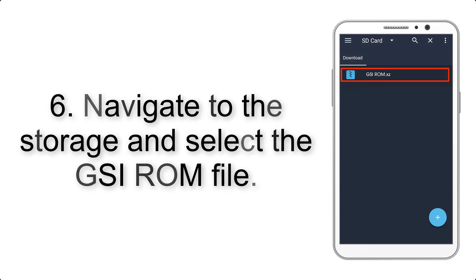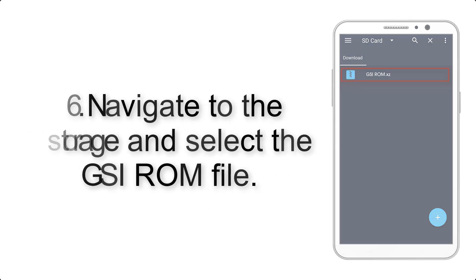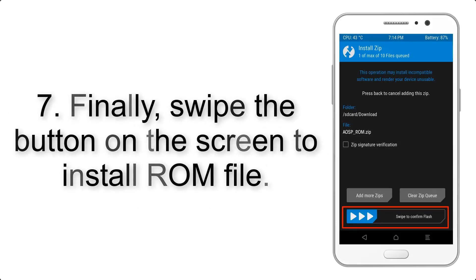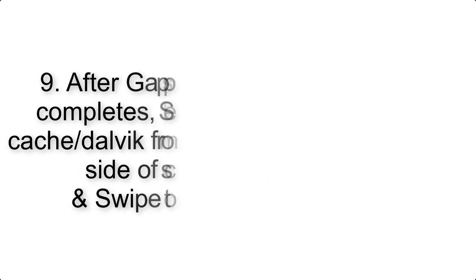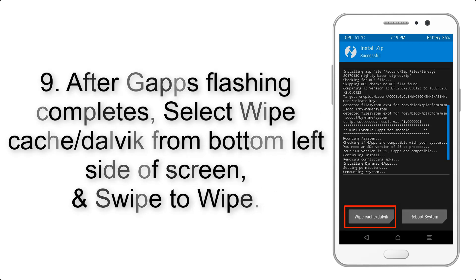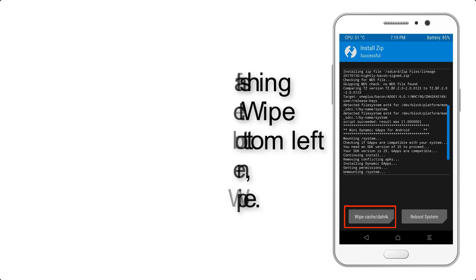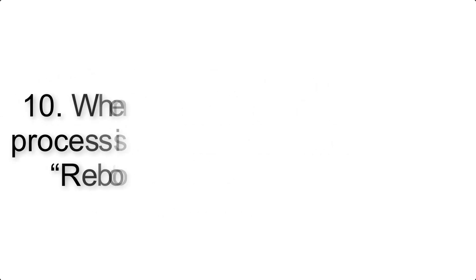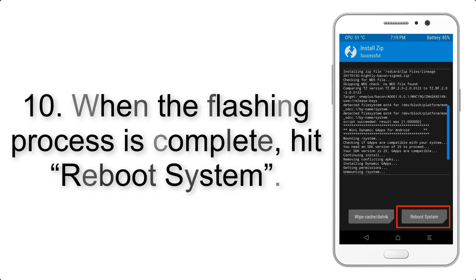Step 5: Go back to the recovery main screen and tap on the Install button. Step 6: Navigate to the storage and select the GSI ROM file. Step 7: Swipe the button on the screen to install the ROM file. Step 9: After Gapps flashing completes, select Wipe Cache and Dalvik from the bottom left side of the screen and swipe to wipe.